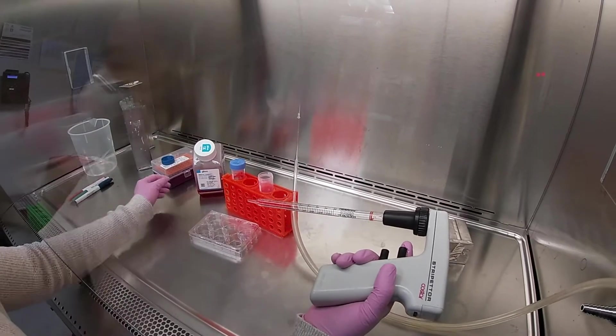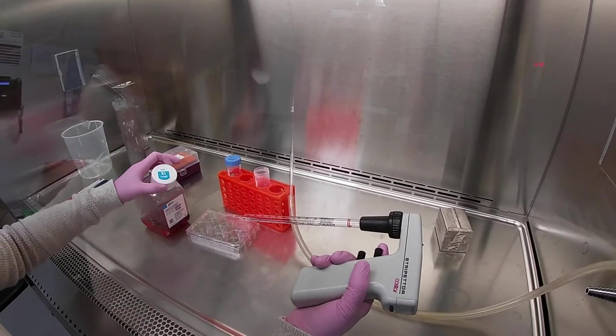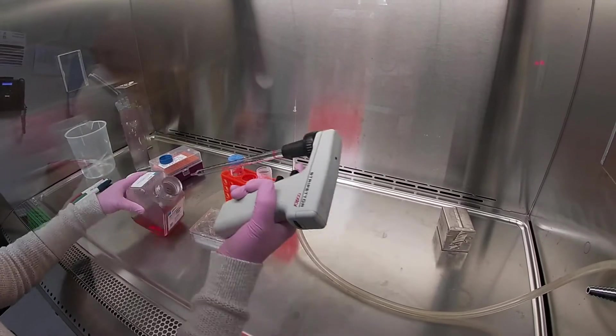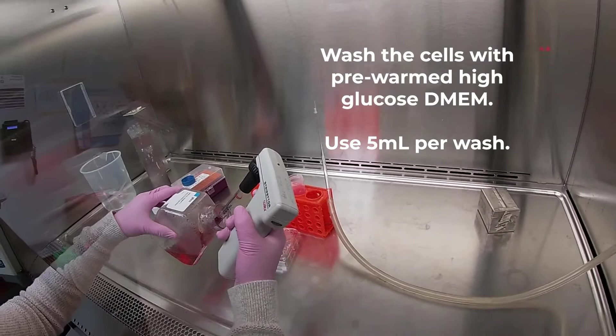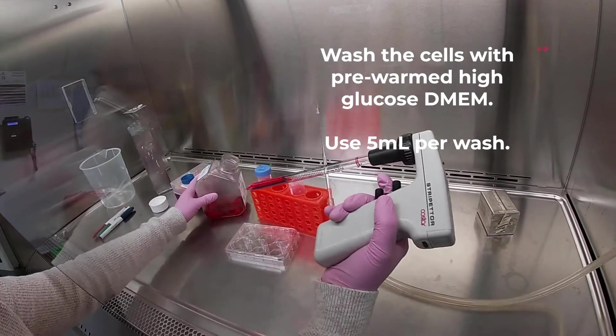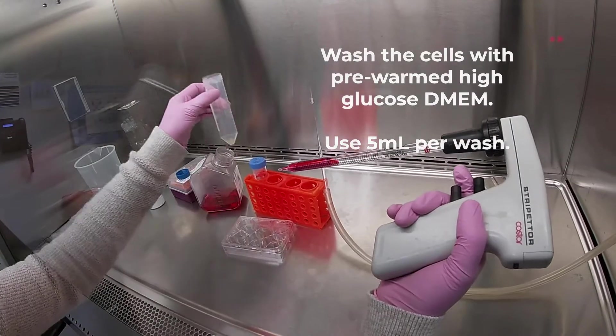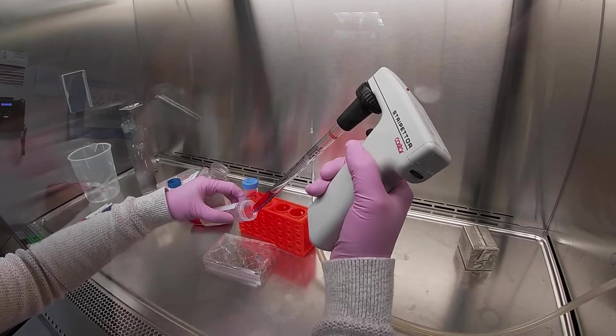Again, we're using DMEM high glucose to rinse off our cells. We will be using 5 milliliters of the high glucose DMEM to wash our cells. The reason why we are washing is because we want to get rid of all the traces of the first media that we used.